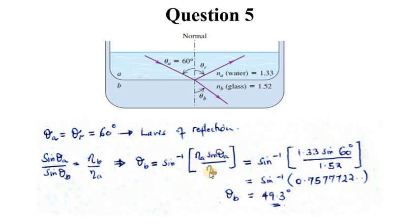This equals sine inverse of 1.33 sine 60 over 1.52. That evidently gives us sine inverse of 0.757772 and so on, and that actually estimates this value to be 49.3 degrees.